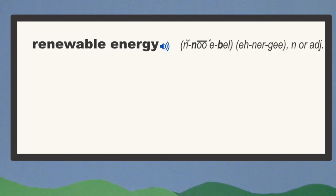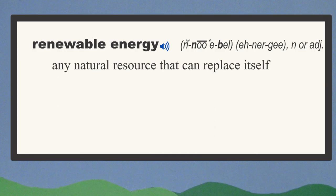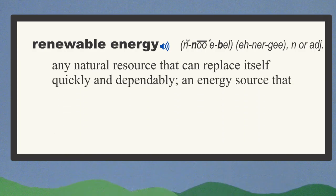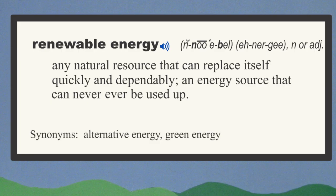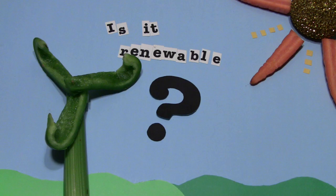Renewable energy, pronounced renewable energy, is any natural resource that can replace itself quickly and dependably. It's an energy source that can never be used up. It can also be called by its synonyms, alternative energy or green energy. But what we really want to know is which resources are renewable and why.